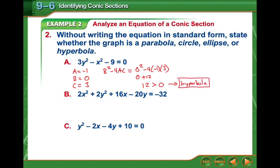Pretty straightforward on that one. The next one, our A value in front of x squared is two. Our B value, there is no xy, so it's zero.